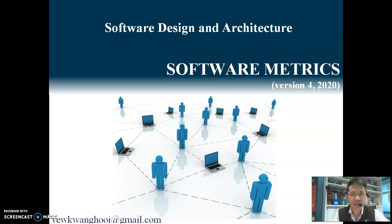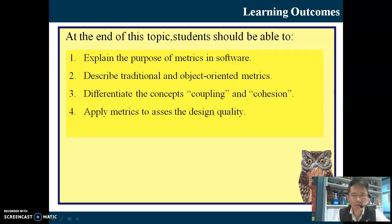Welcome back students. We are in part 2 of software design architecture — software metrics. Earlier we looked at the purpose of metrics in software, the definition of metrics, the different types of metrics, coupling and cohesion, and one example applying weighted method per class in a library system.